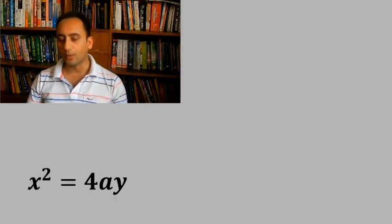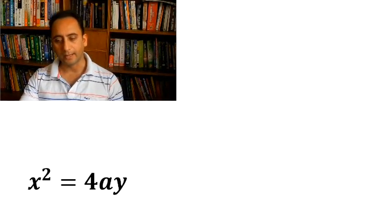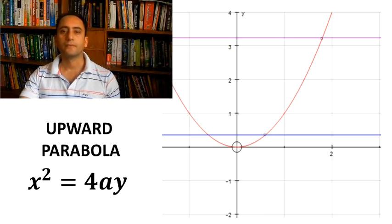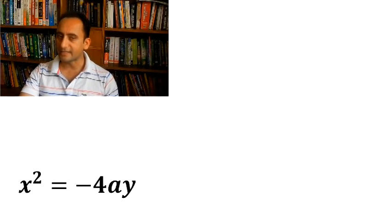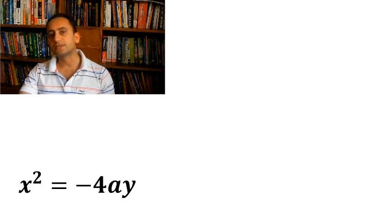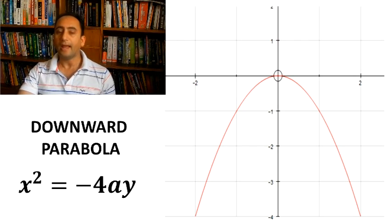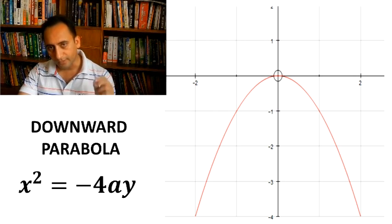The first equation we are going to discuss is x² = 4ay. This equation represents an upward parabola. The second equation is x² = -4ay. Whenever the negative sign comes, the upward parabola becomes a downward parabola, and x² = -4ay represents a downward parabola.